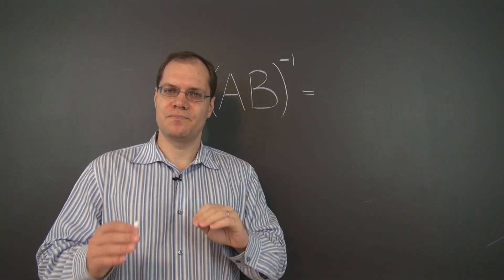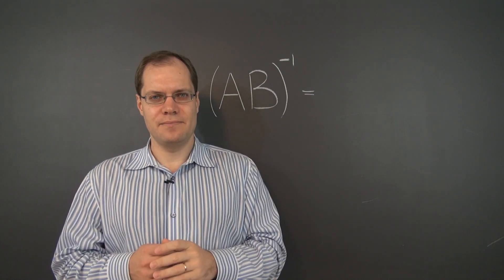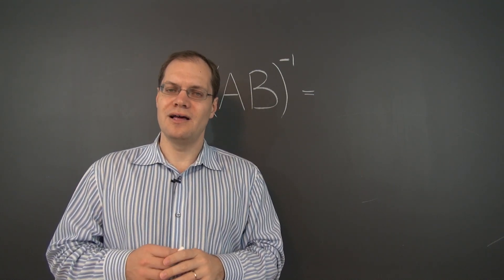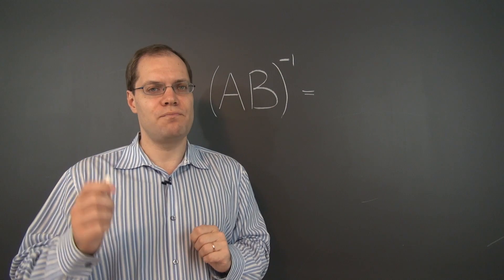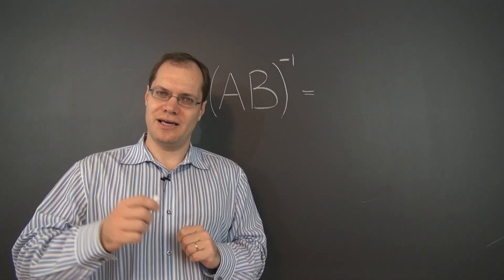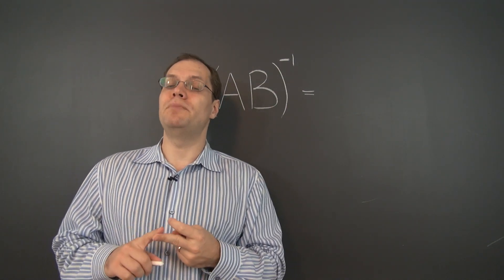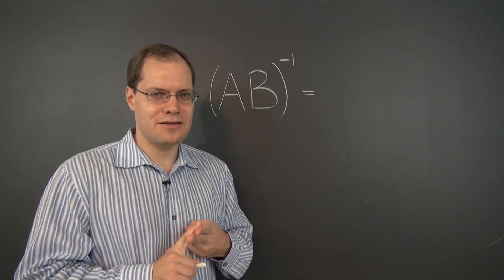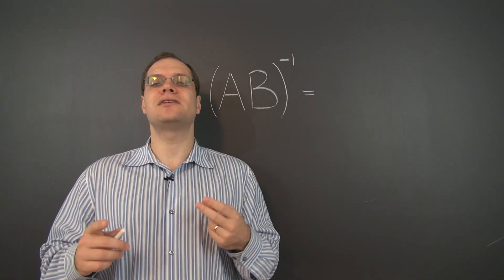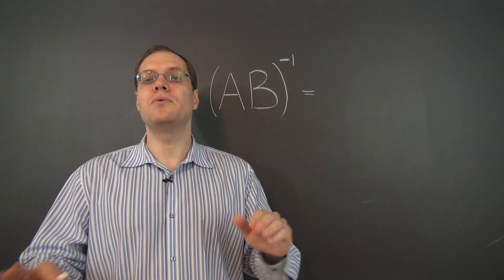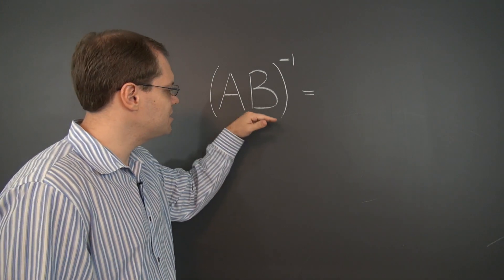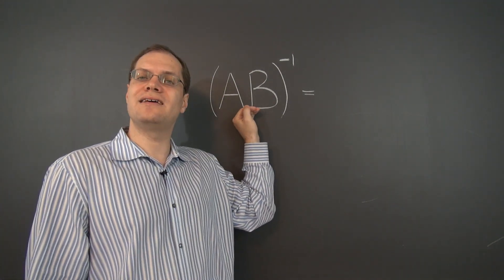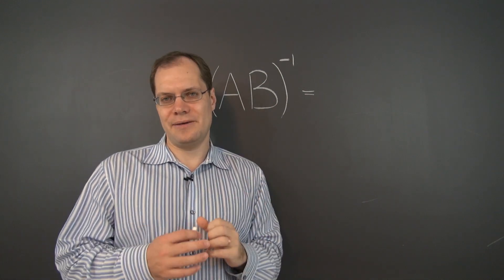So let me set up the problem. Suppose we have two matrices A and B, both are invertible, and somehow we know the inverse of both, or each. We know A inverse and we know B inverse. Maybe we calculated those inverses, maybe we somehow know them in a different way, but we know those inverses. And now we're faced with the task of calculating the inverse for their product, AB.